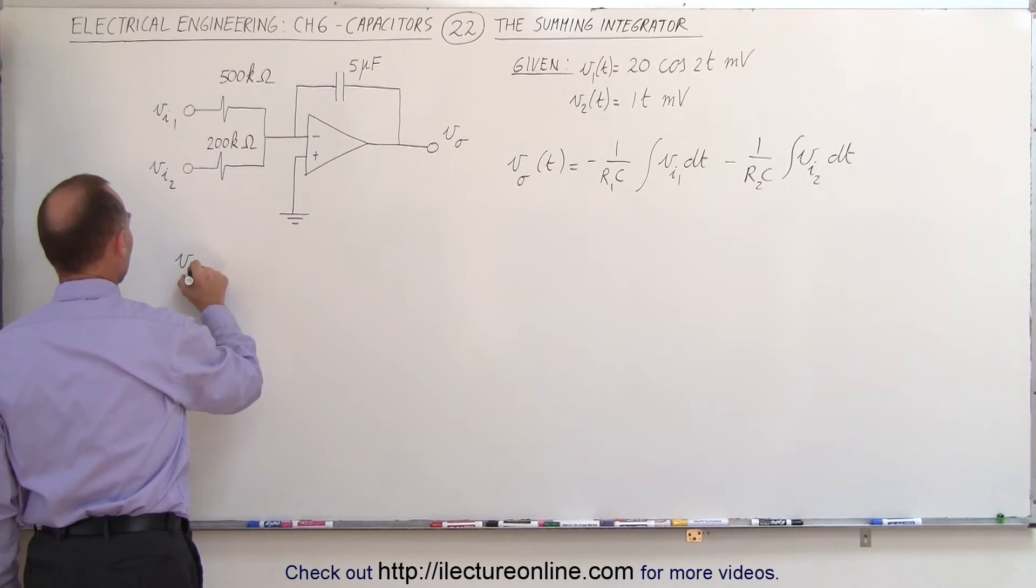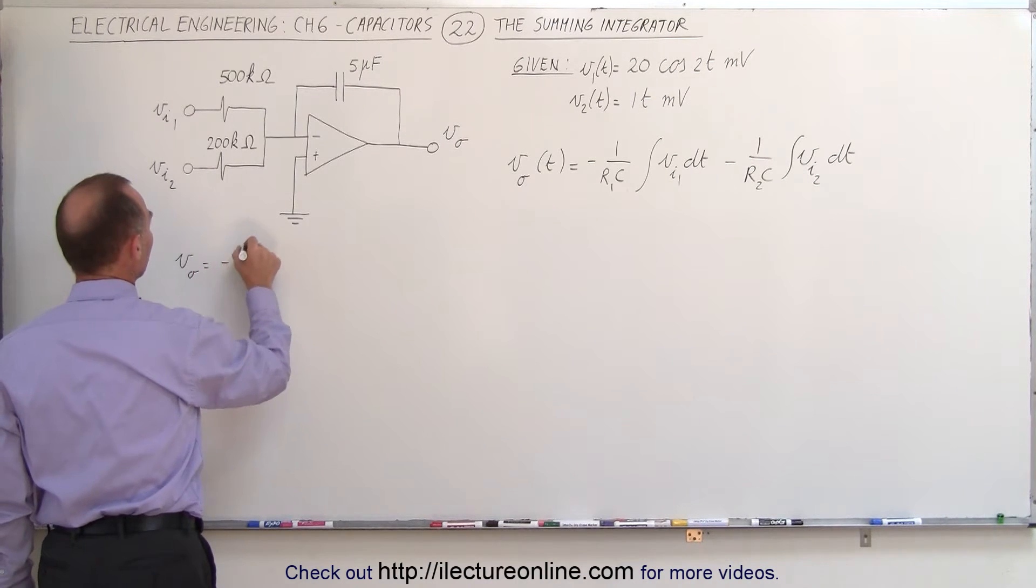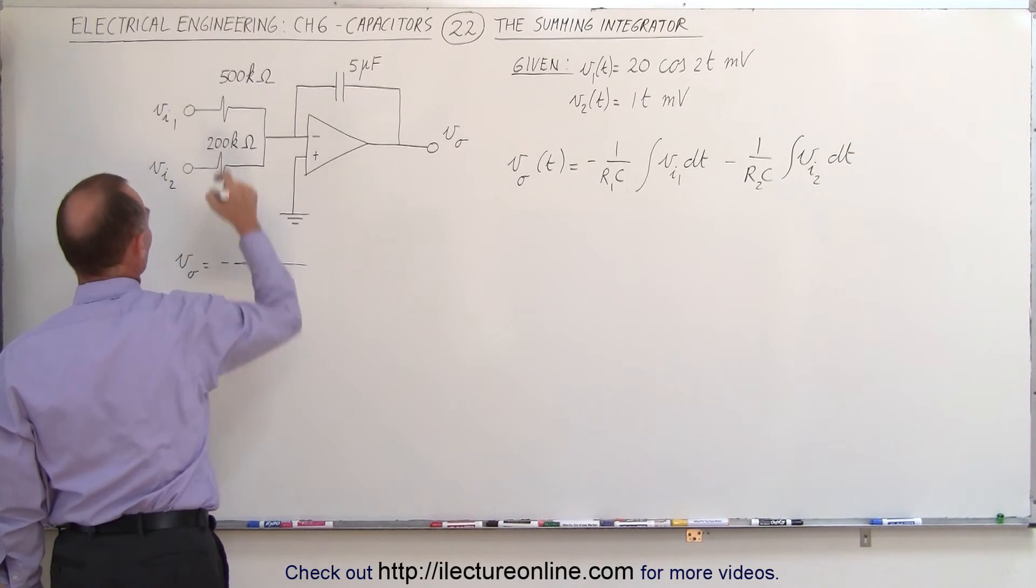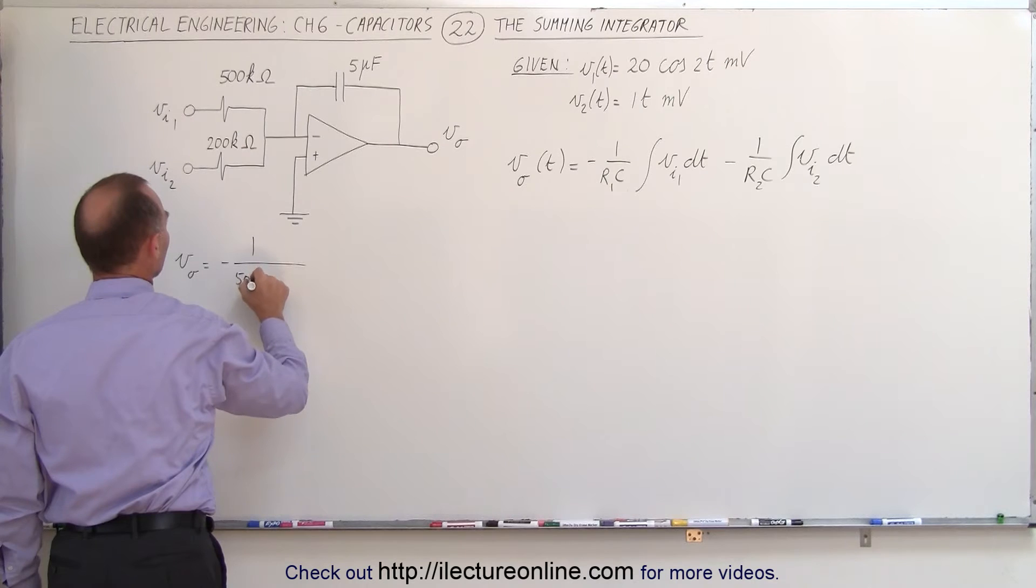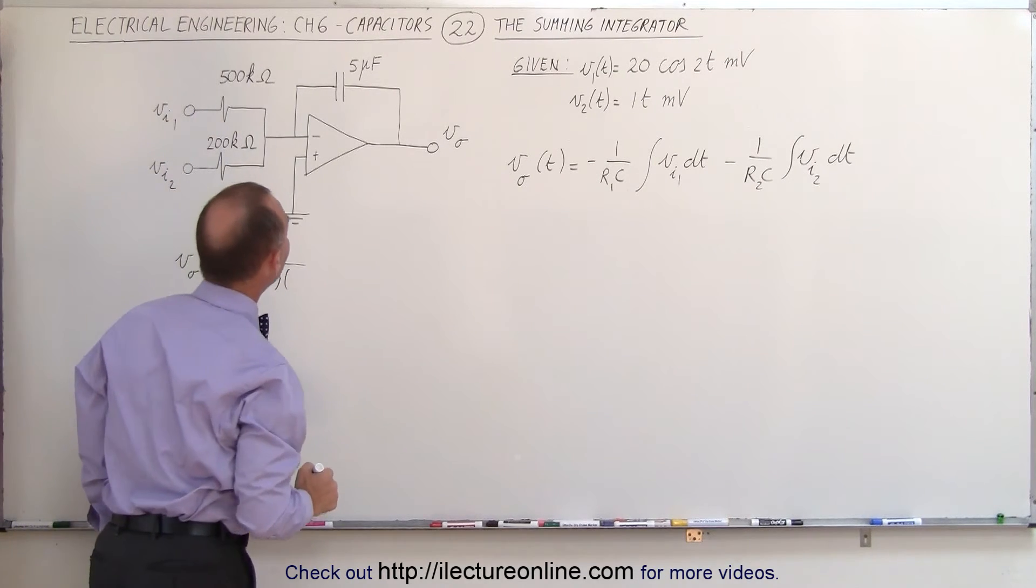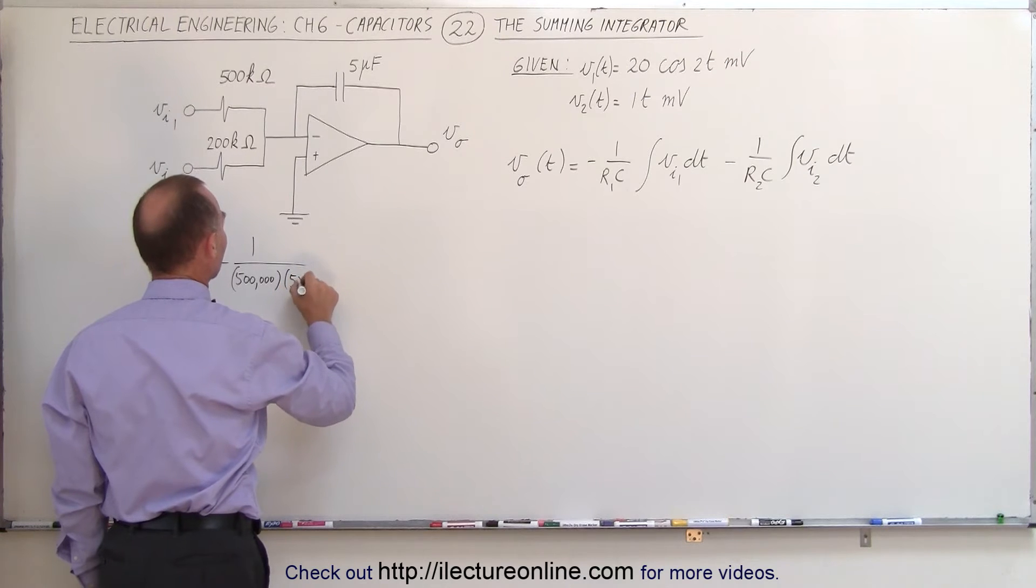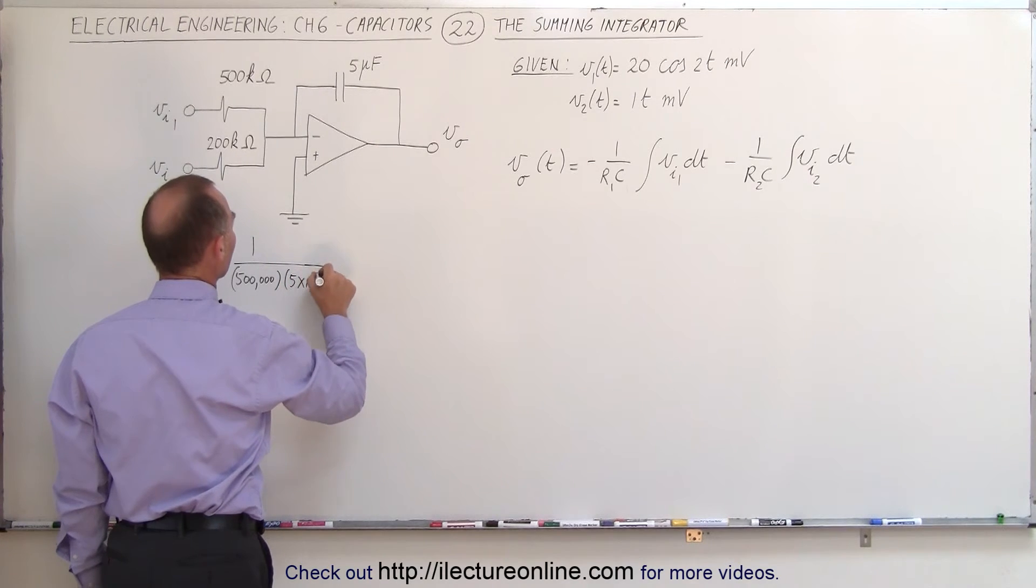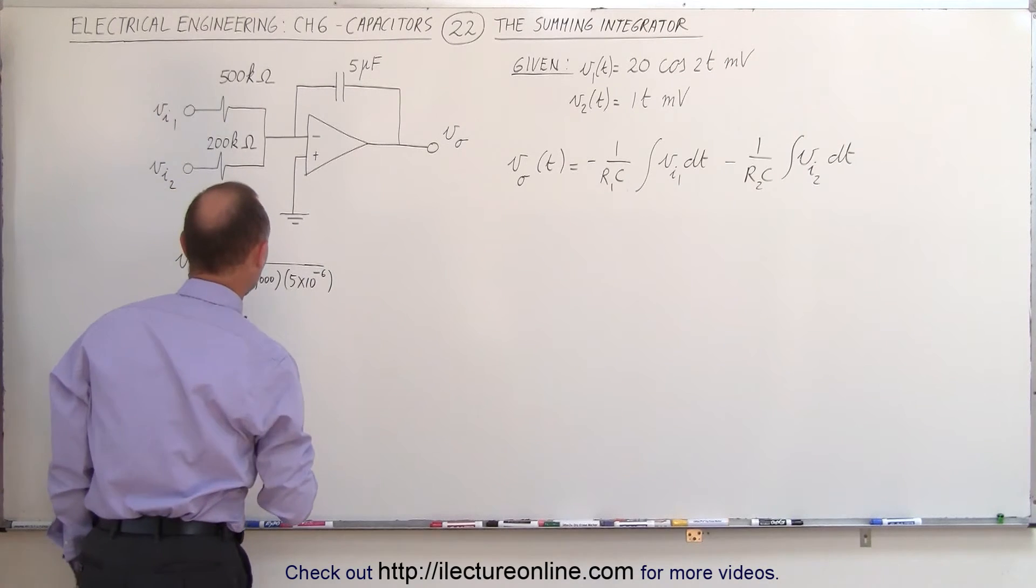The output is equal to minus 1 over the resistance, which is 500 kilohms, so 500,000 Ohms, multiplied times the capacitance, which is 5 times 10 to the minus 6 farads, like that.